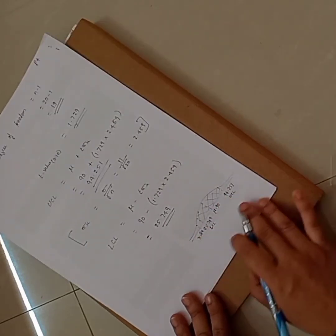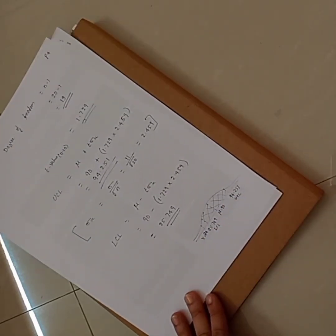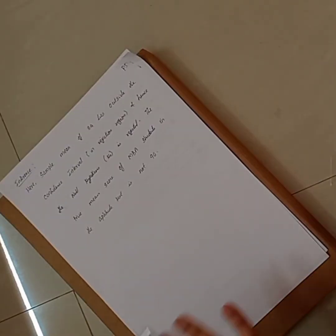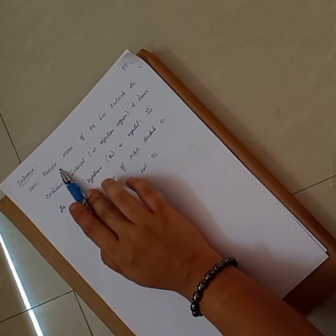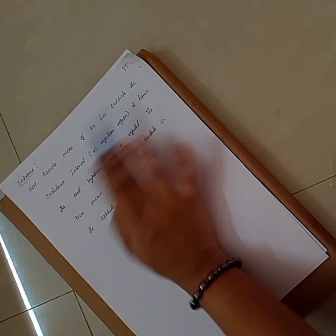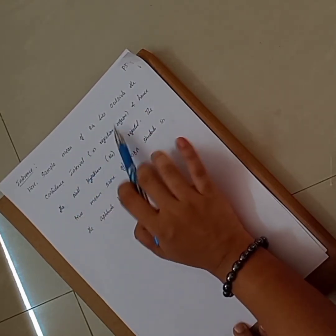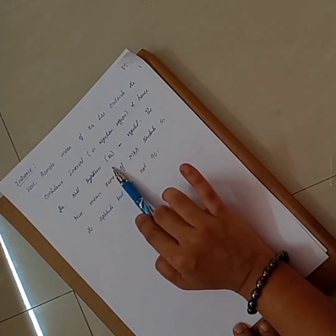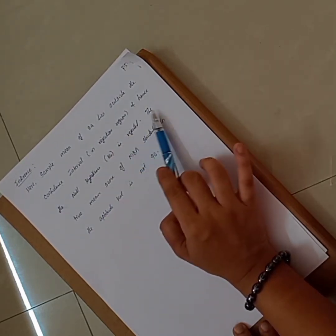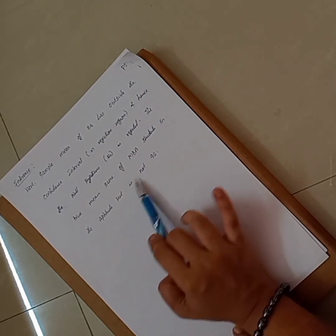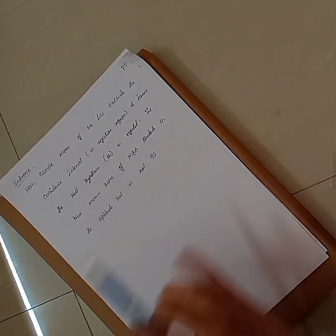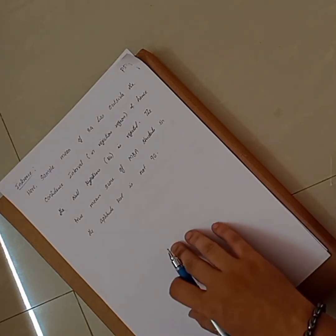Since the sample mean of 84 lies outside the confidence interval in the rejection region, we reject the null hypothesis H0. Therefore, the true mean score of MBA students in the aptitude test is not 90, meaning the HR manager's assumption is not correct.